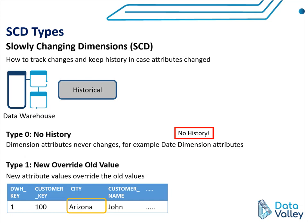In this type of SCD, we keep updating dimension data with the new data coming from the source system. The advantage is that we now have updated data that matches the source system. But the disadvantage is that we don't have history — we still don't have the old values, only the new values from the source system.